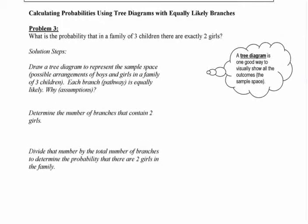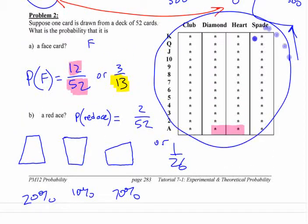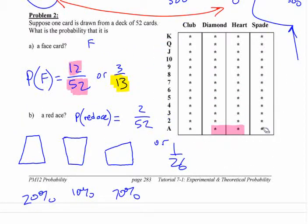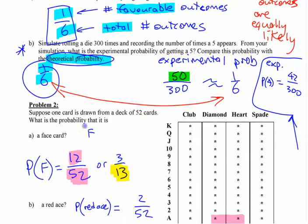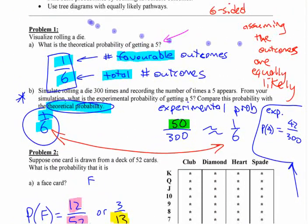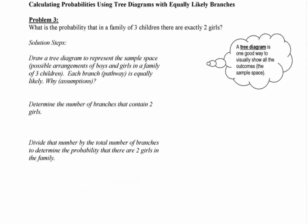Sometimes you can show the sample space for something with kind of a table like this. Sometimes you can show it with just a list, right? A mental list here. Up here, it was, you know the six outcomes. You don't even have to write them out, right? One, two, three, four, five, six. There's all the outcomes. Sometimes it's not easy to see what the outcomes are.